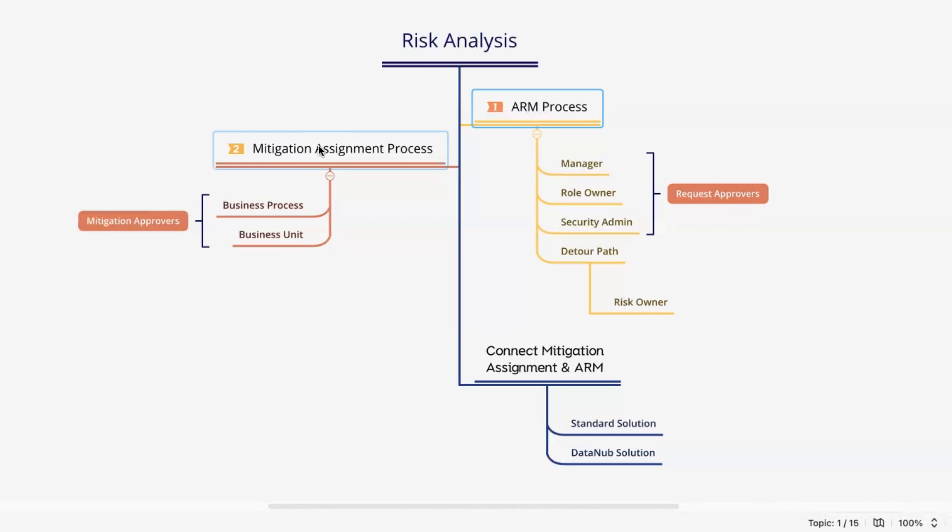The challenge in most cases is that we need to have two different workflow processes running in parallel, independent of each other. For your ARM request, when we have a risk, we go and mitigate it but do not follow the mitigation assignment workflow. And when we are doing a mitigation assignment workflow, the request from the ARM is not connected.